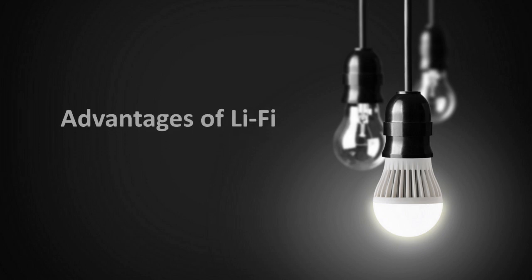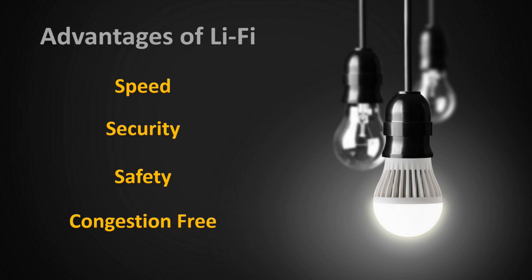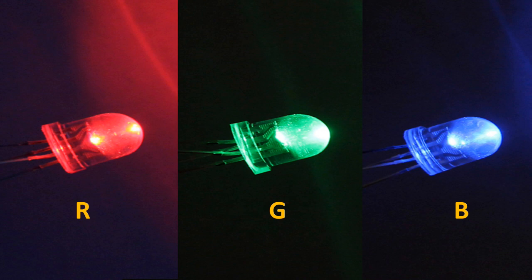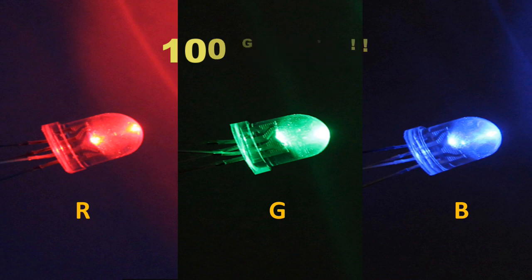Now that we know how Li-Fi technology works, let's see its advantages over other wireless communication technologies. In terms of speed, researchers have achieved data speeds up to 10 Gbps in lab-scale prototype models. This speed can be further enhanced by using an array of LED sources or multiple colors of LEDs like RGB LEDs, where each LED source is able to transmit data up to 10 Gbps. Using such technologies, researchers have achieved a maximum speed of up to 100 Gbps.